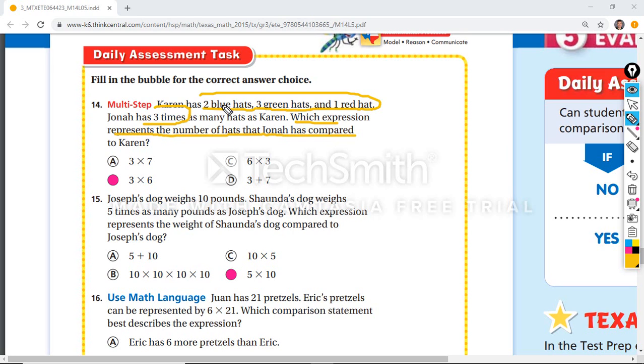So what you have to do is you have to add Karen's. Two plus three is five, plus one is six. So it's three times more than six.